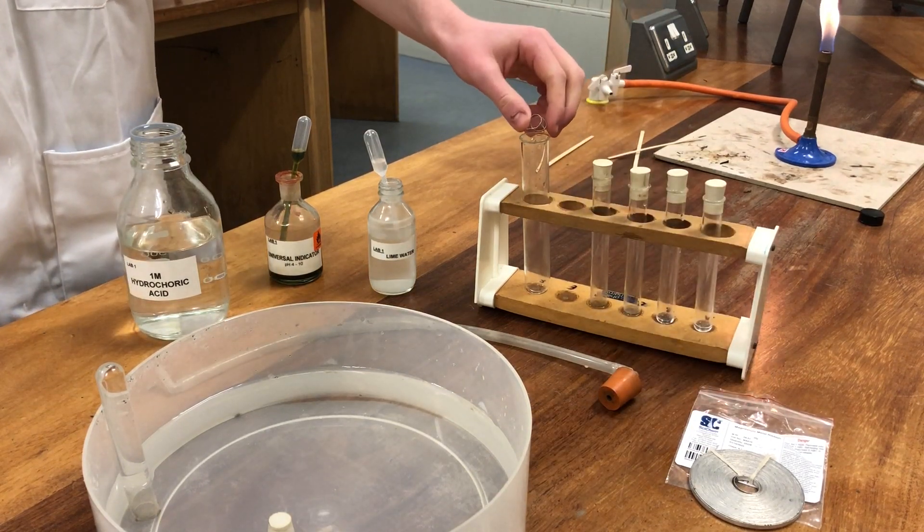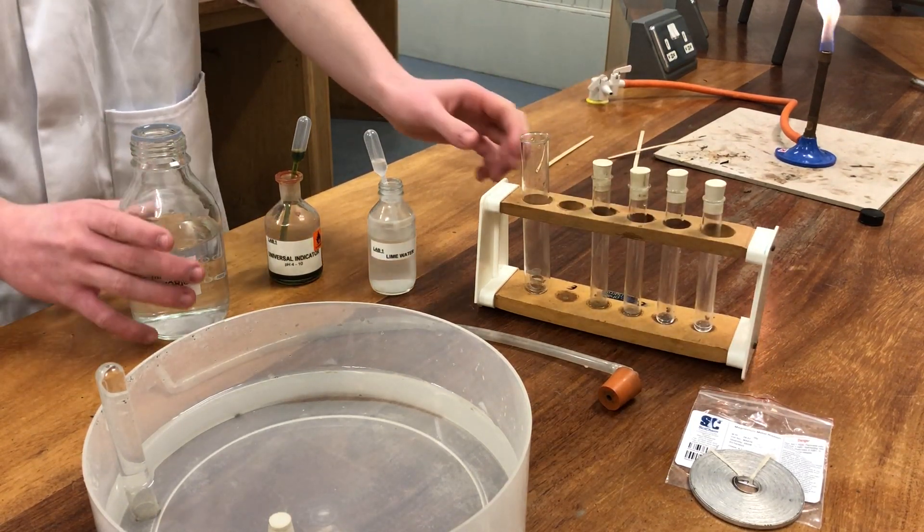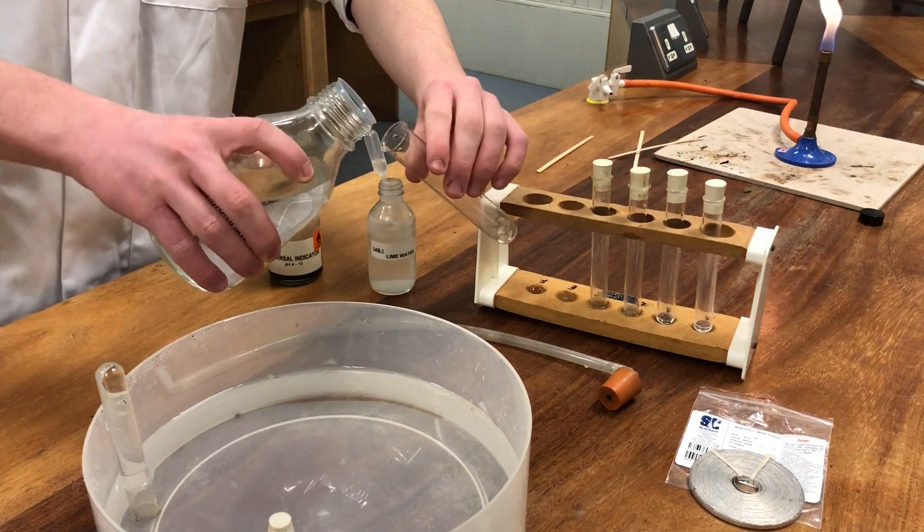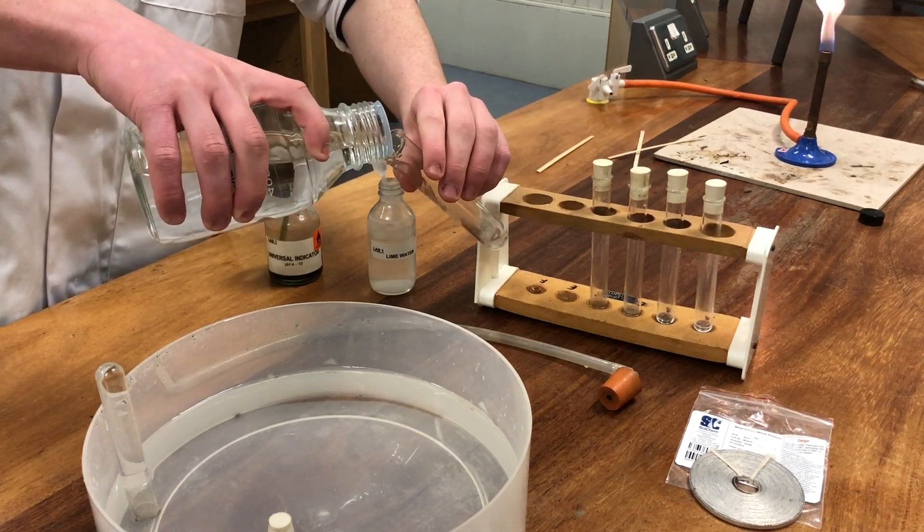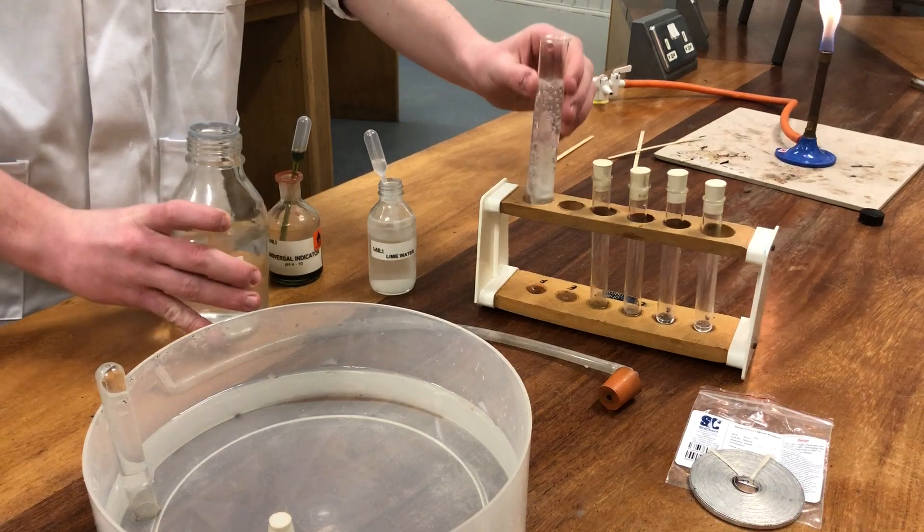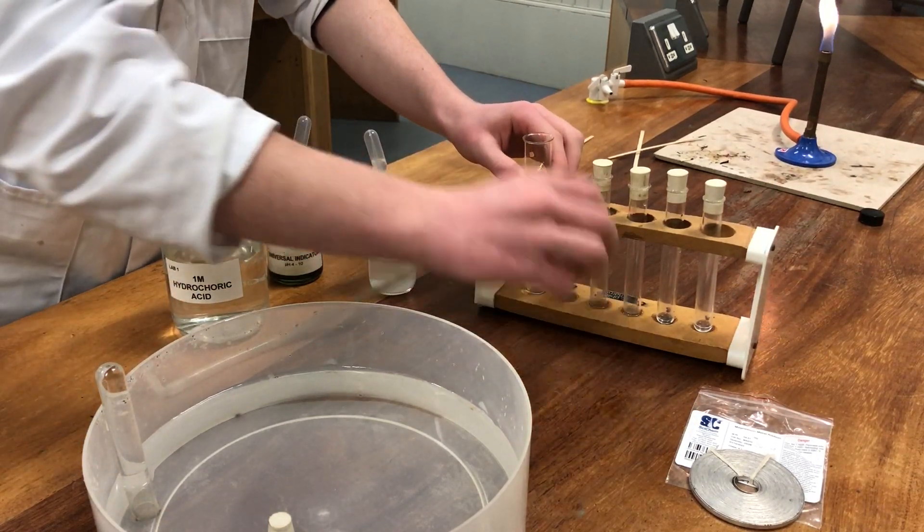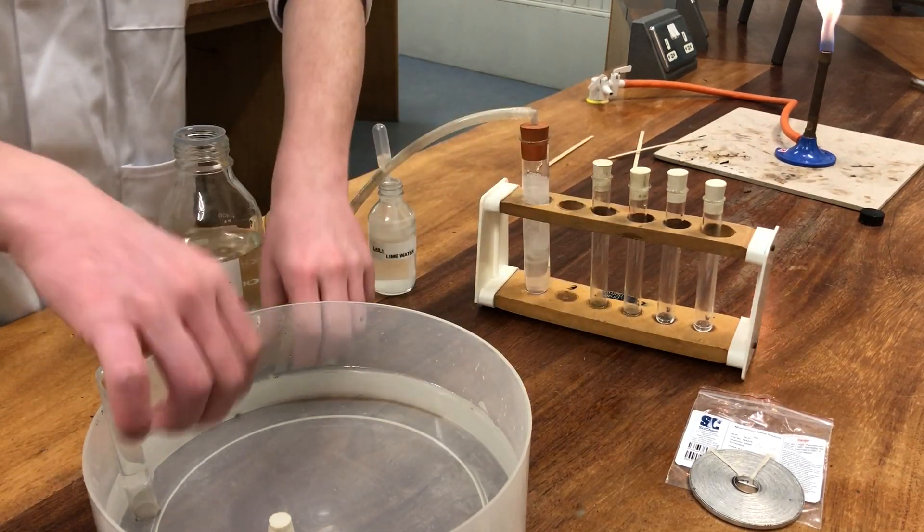Magnesium comes as a ribbon and it's easily cut and easily twisted into a little twirl there, reacting very rapidly with the hydrochloric acid.